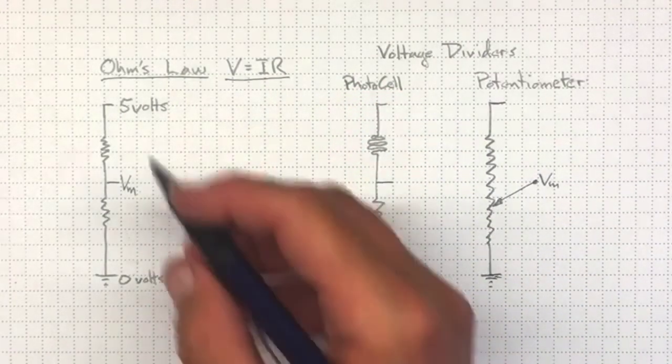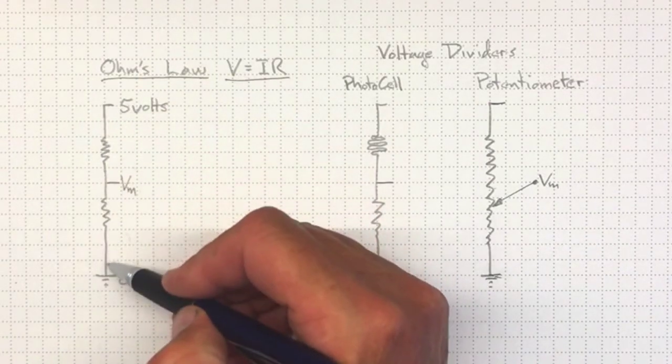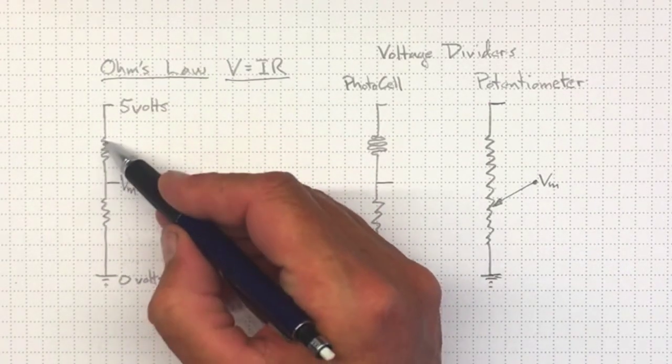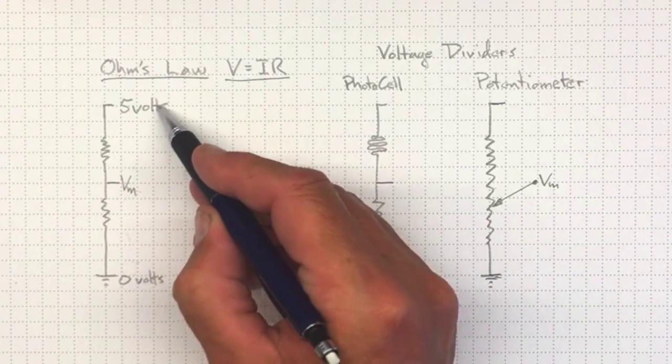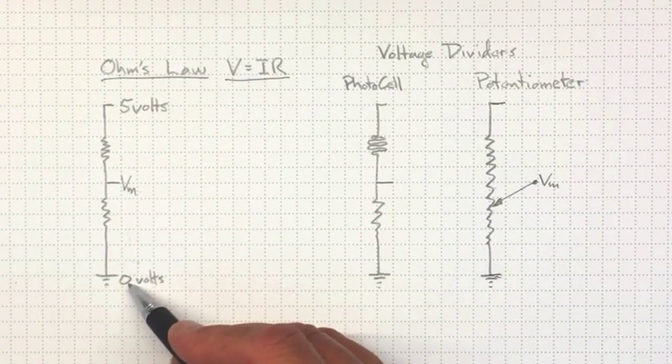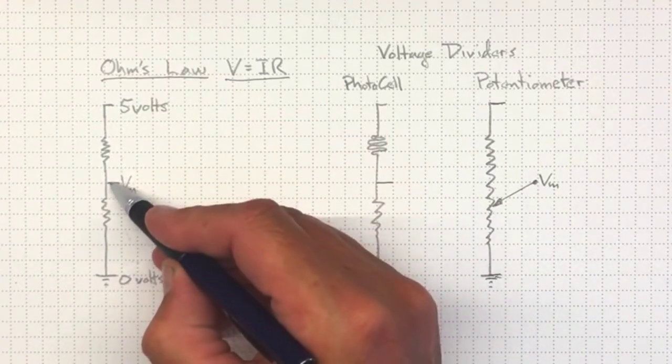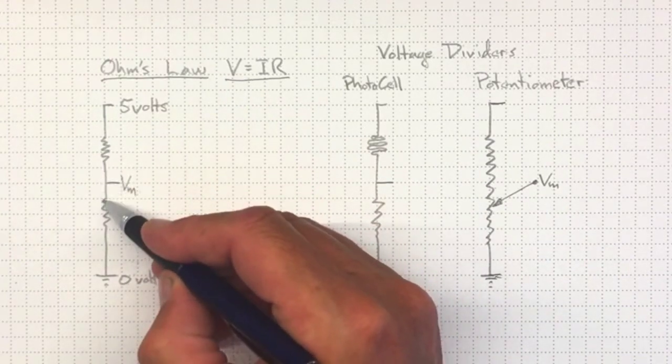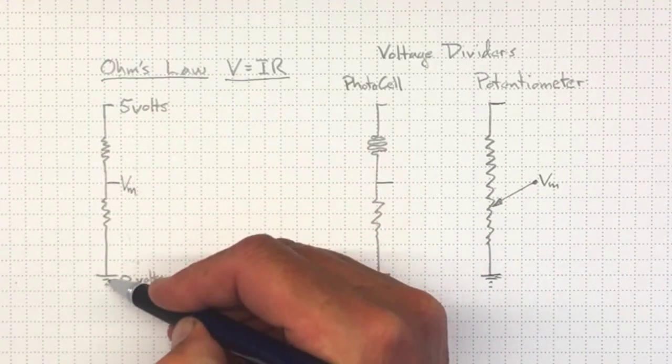So what that tells us, for a simple circuit where we put two resistances in series so that they add together, if we apply five volts from the UNO up here and ground, zero volts down here, then the voltage VM in the middle here will be somewhere between five volts and zero volts.